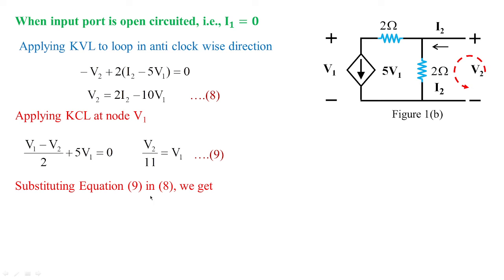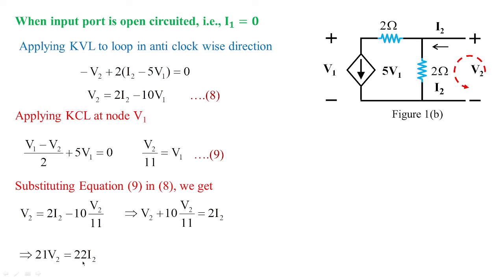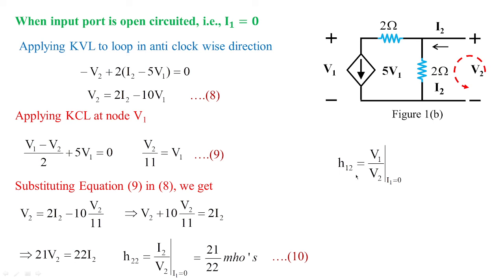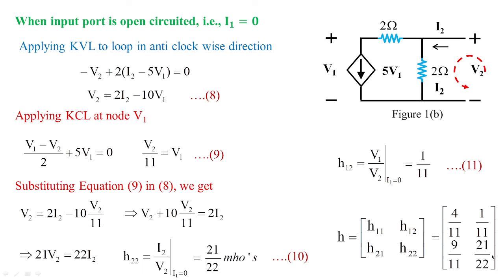Substituting equation 9 into equation 8: v2 = 2·i2 − 10·(v2/11), so v2 + 10·v2/11 = 2·i2, giving 21·v2 = 22·i2. Therefore h22 = i2/v2 = 21/22 siemens (output admittance when input port is open-circuited). From equation 9, h12 = v1/v2 = 1/11 (reverse voltage gain when i1 = 0). The H parameters for this circuit are: h11 = 4/11 Ω, h12 = 1/11, h21 = 9/11, h22 = 21/22 S.